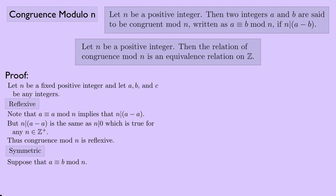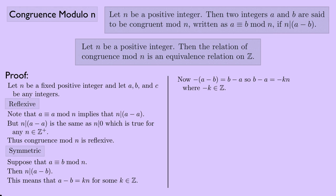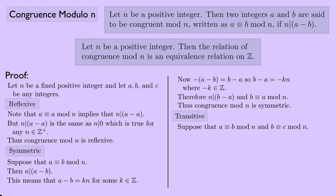For symmetric: suppose a ≡ b (mod n). Then n divides a minus b, which means a minus b equals k times n for some integer k. Since negative(a minus b) equals b minus a, we have b minus a equals negative k times n, where negative k is also an integer. Therefore n divides b minus a, and b ≡ a (mod n). So congruence mod n is symmetric.